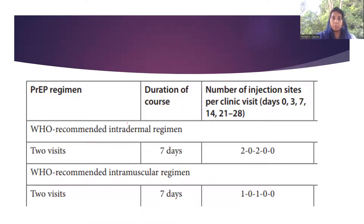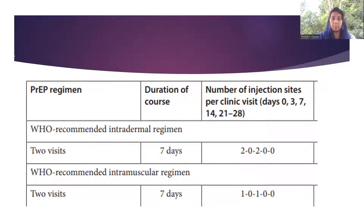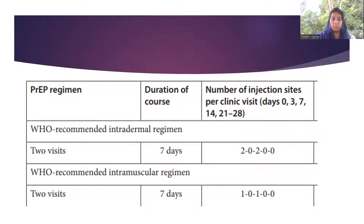From the WHO guidelines cutout: the intradermal regime has a duration of seven days only — day zero and day seven, so two doses. That is why they have written two-two for intradermal visits, and one-one for intramuscular. These are the two things to remember.